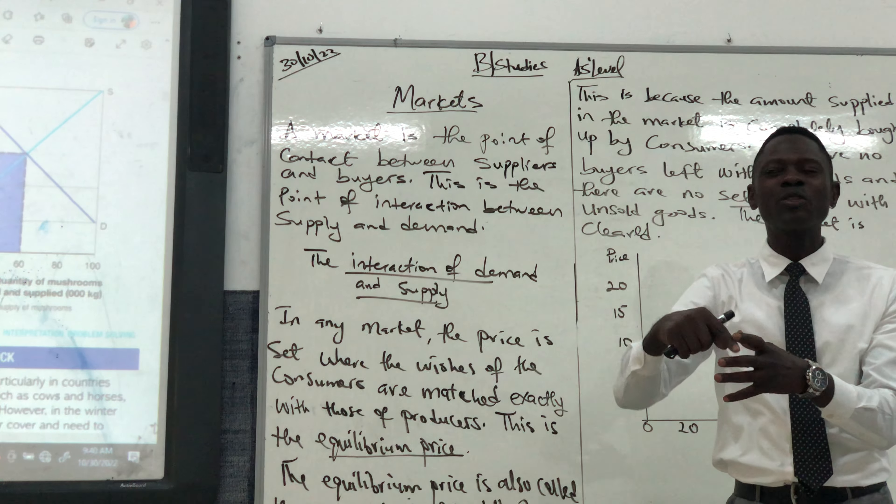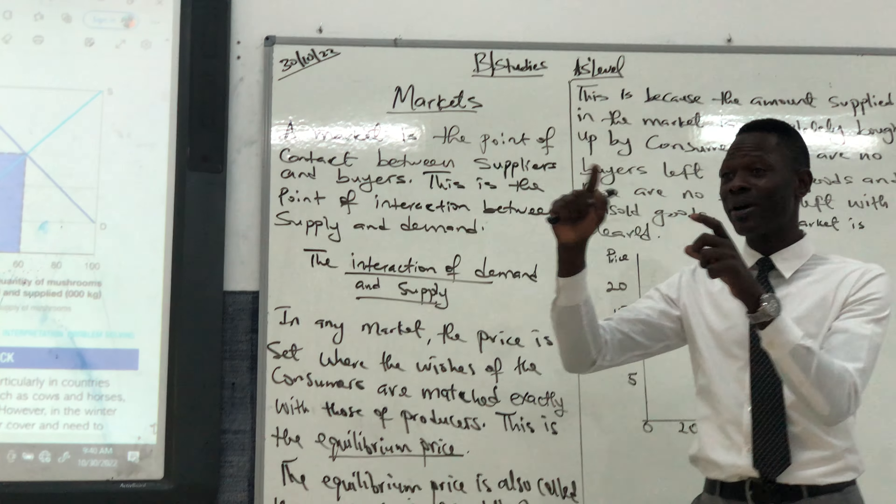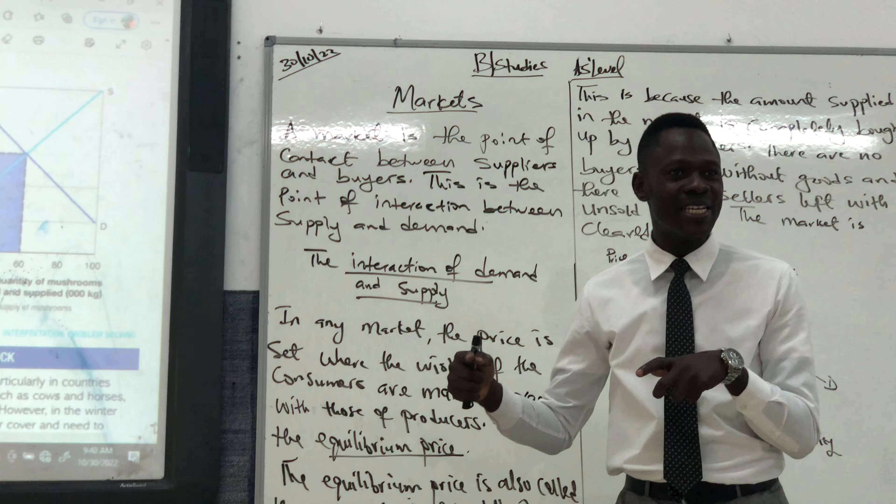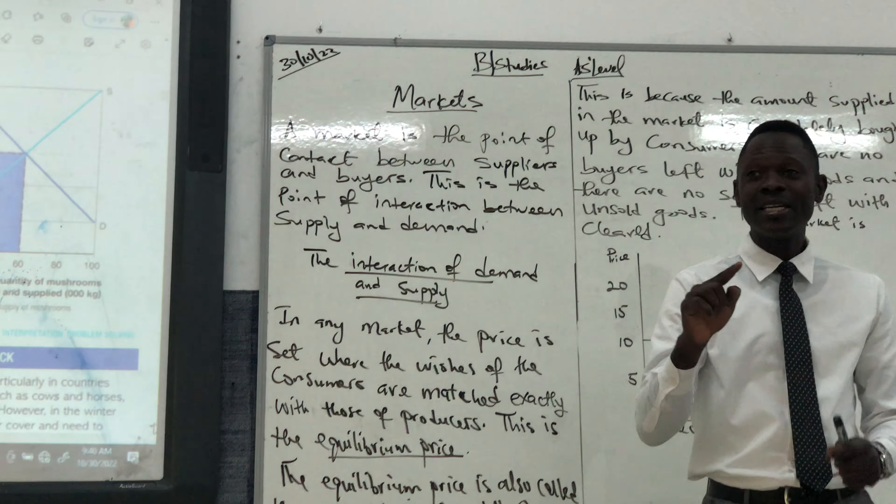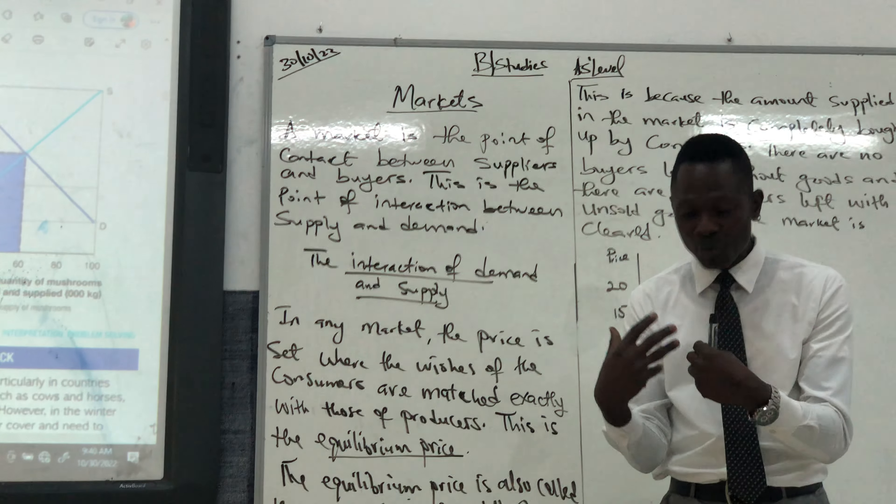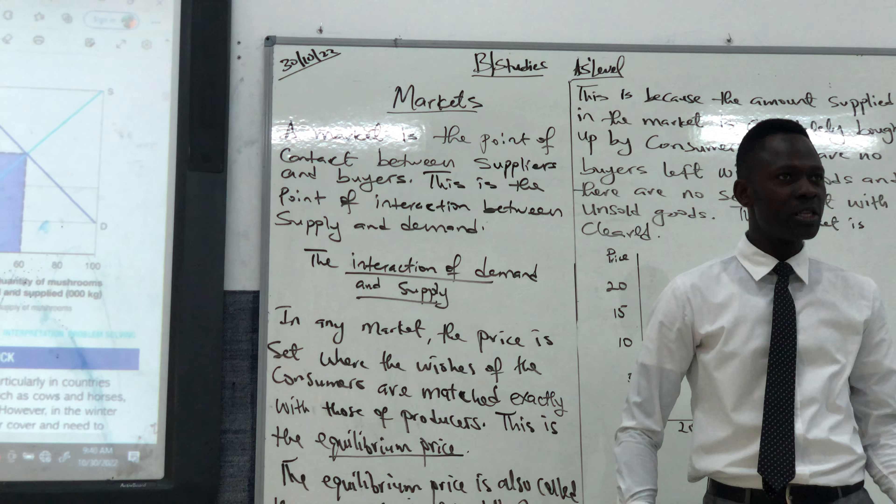In the market, there's always what we call equilibrium price, where the price matches the wishes of the consumers. Who sets the price? The business. But they have to set the price to the extent that it matches what consumers can afford to pay.